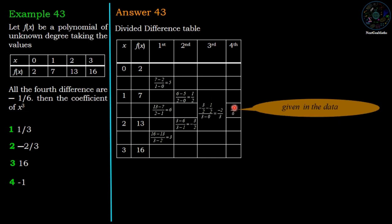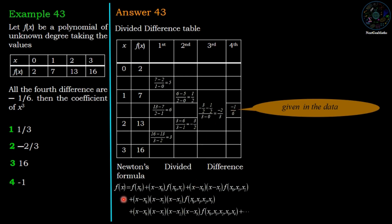Now Newton's divided difference formula: f(x) equals f(x₀) plus (x minus x₀) times first order difference, plus (x minus x₀)(x minus x₁) times second order difference which is 1 by 2, plus (x minus x₀)(x minus x₁)(x minus x₂) times third order difference, plus (x minus x₃) times fourth order difference, and continue.